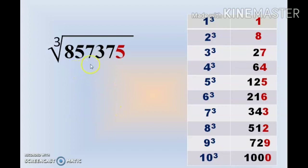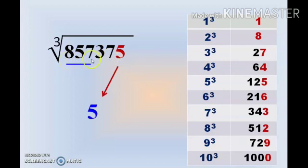Here we have the number 857,375. This number ends in 5. We know that if a number ends in 5, the cubic root also ends in 5, so we write 5 as the units digit. In the second step, we skip the last 3 digits and the remaining number is 857. The number 857 falls between the range 729 and 1000. The lowest range is 729, and the corresponding cubic root is 9. So the answer for 857,375 is 95.